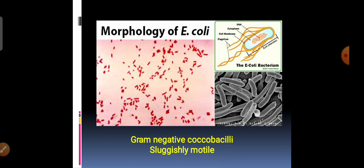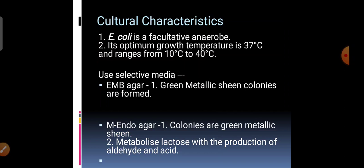If you get gram negative bacilli — not coco-bacilli, not short rods — and if they are actively motile, it can be Salmonella. Depending upon the gram nature and the motility test, you choose selective media. E. coli is a facultatively anaerobic organism. The optimum temperature for growth of E. coli is 37 degrees Celsius, though it can grow over a variety of temperature ranges.